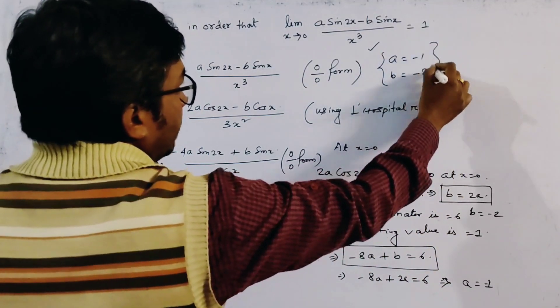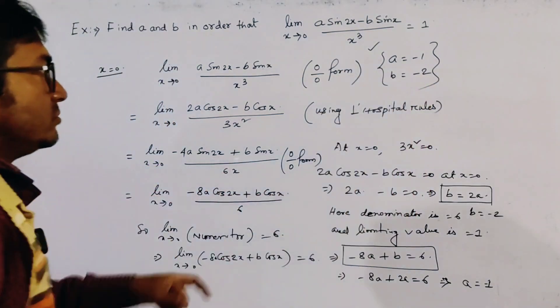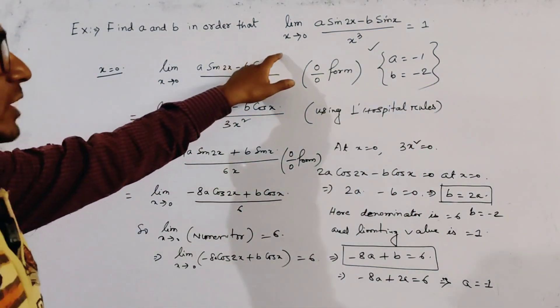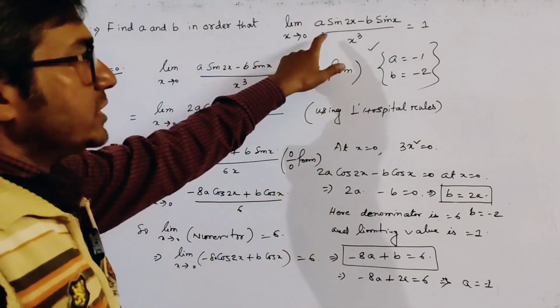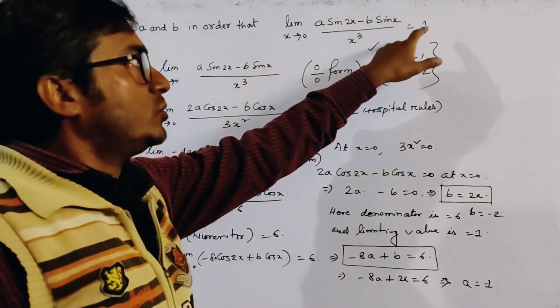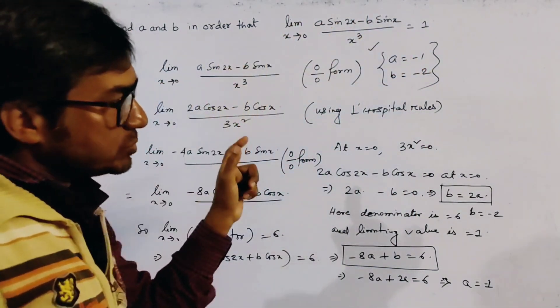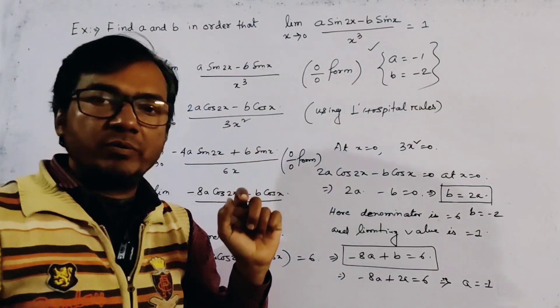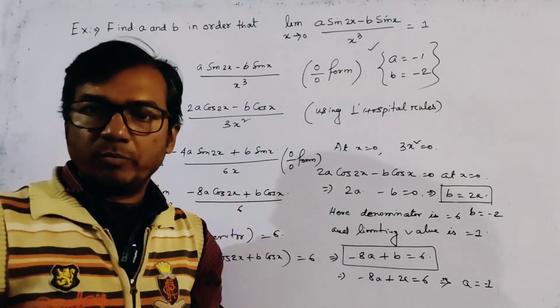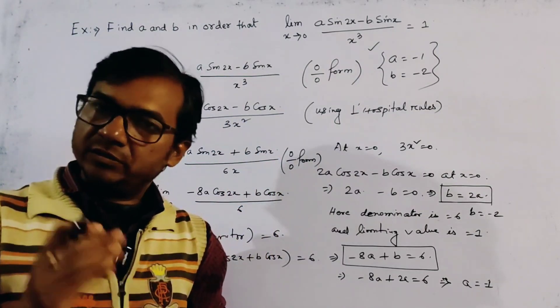Using L'Hôpital's rule, we found that the limiting value of this function equals 1, giving us A equals minus 1 and B equals minus 2. This is a straightforward problem in limits.